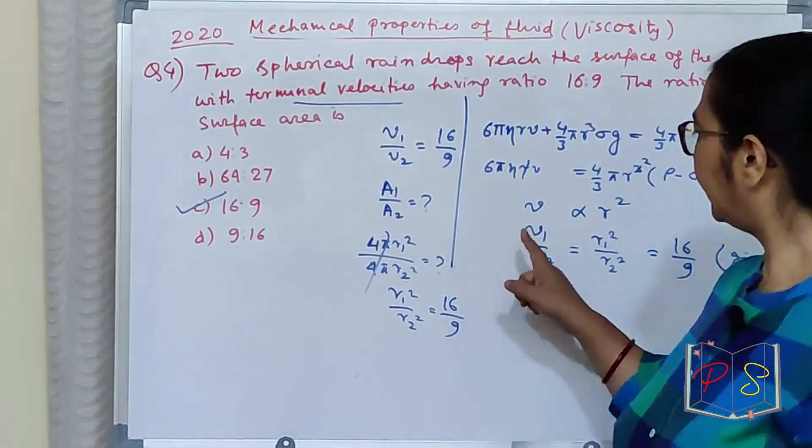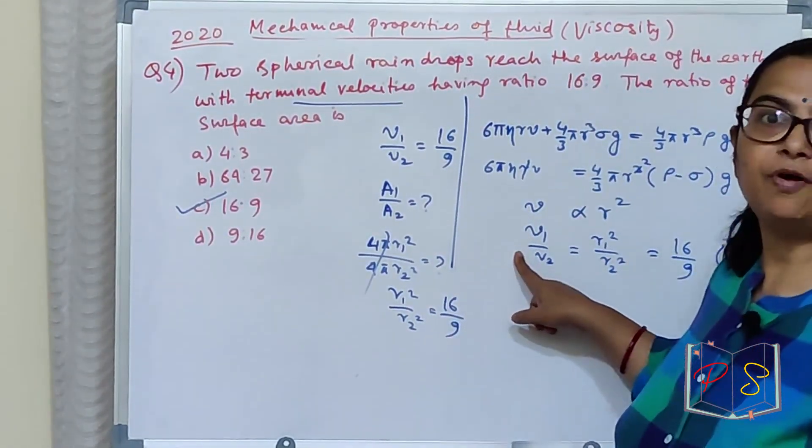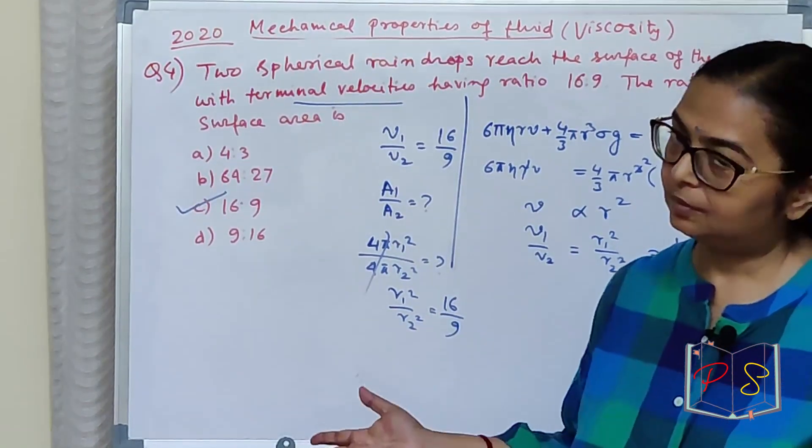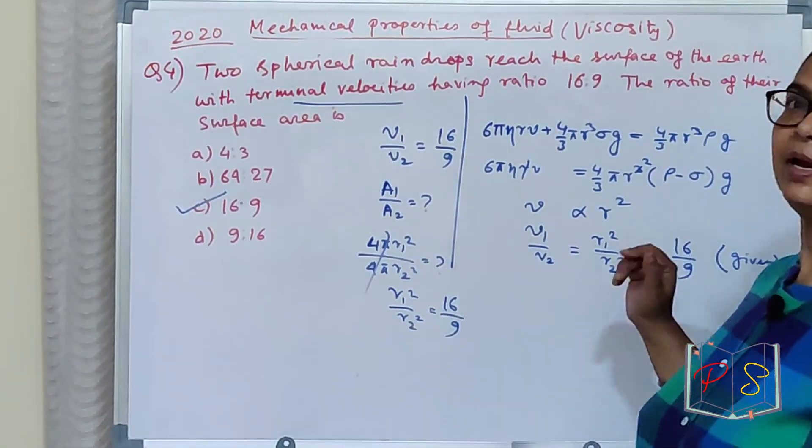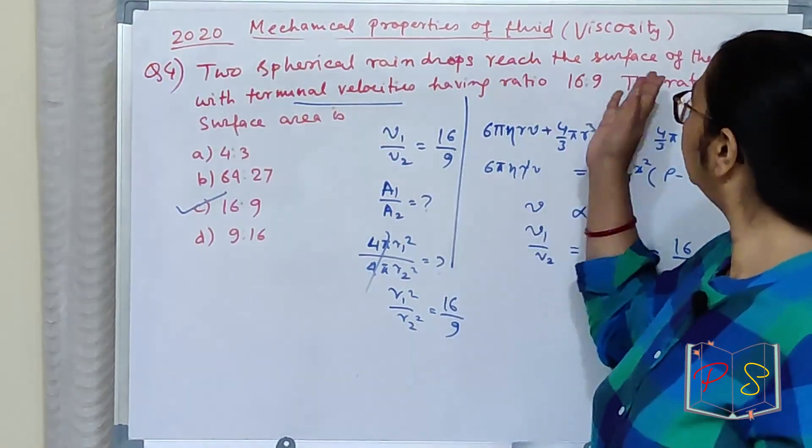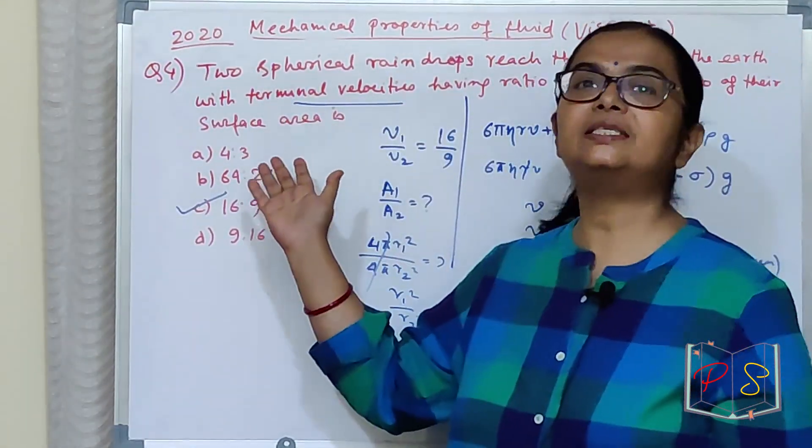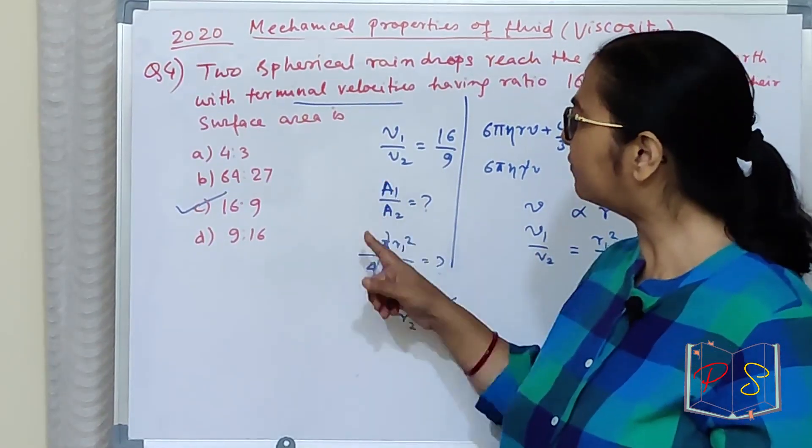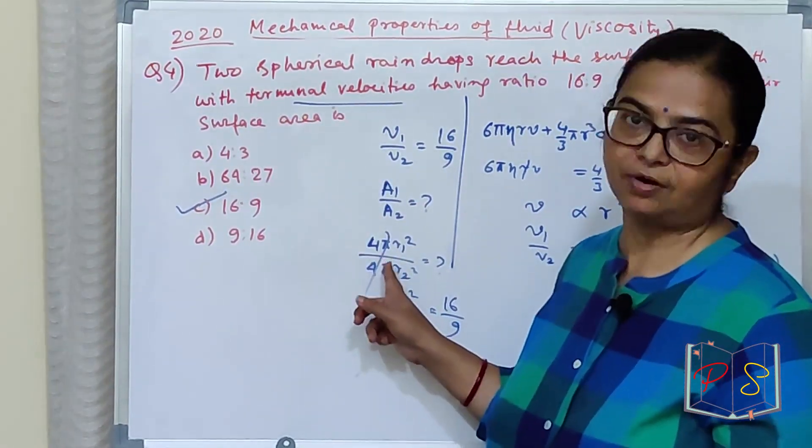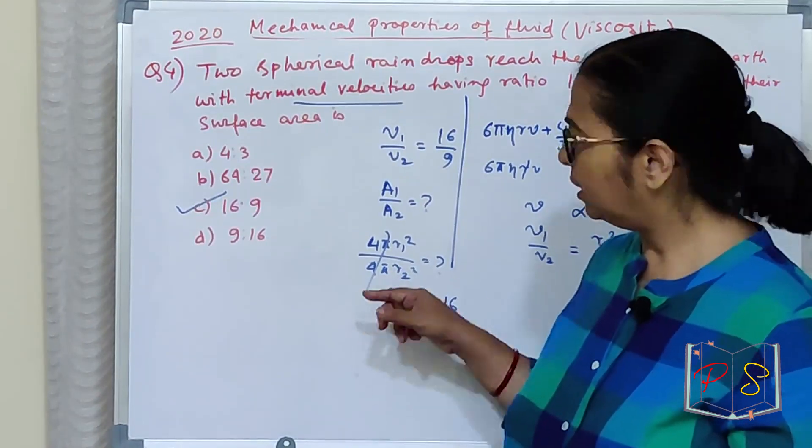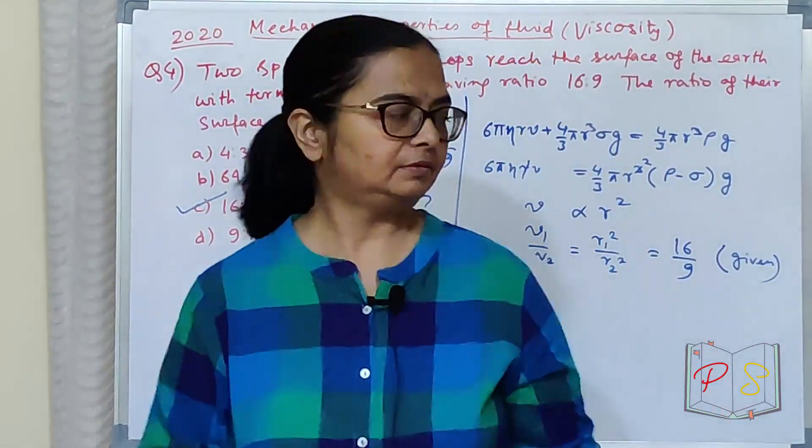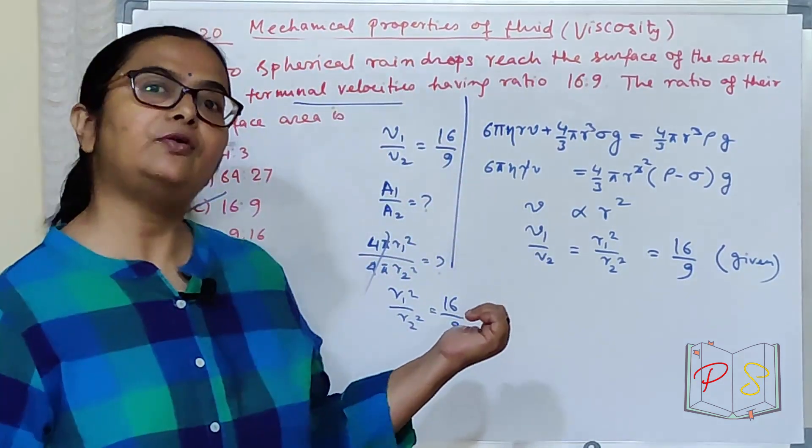First thing. E wala jizh jahna. V1 by V2 equal to r1 square by r2 square. Ho to dehi diya 16 by 9. E aise aap poochha hai. The ratio of their surface area. Aap sochte rao hoongi surface area kya hai? Basically surface area is 4 pi r1 square by 4 pi r2 square. R1 square by r2 square. Thaakko mehe li chuka hai ho to given hai. 16 by 9 will be your correct option.